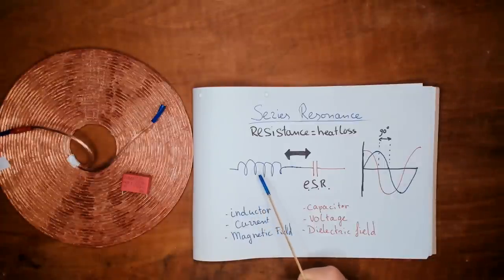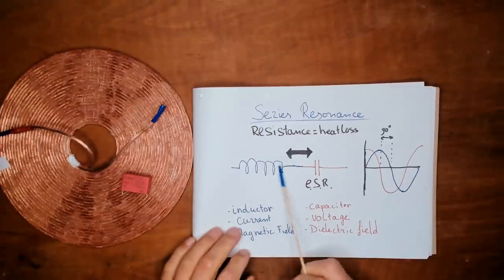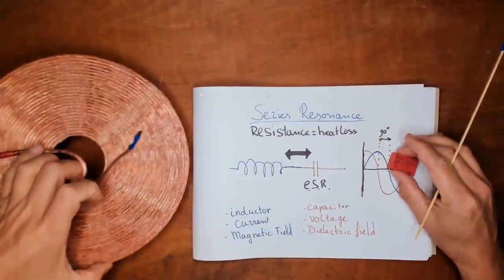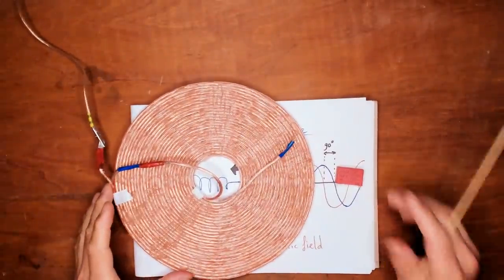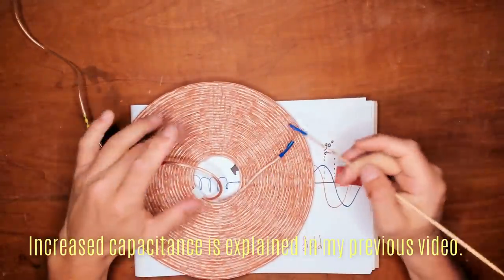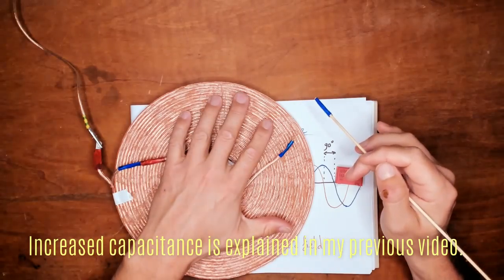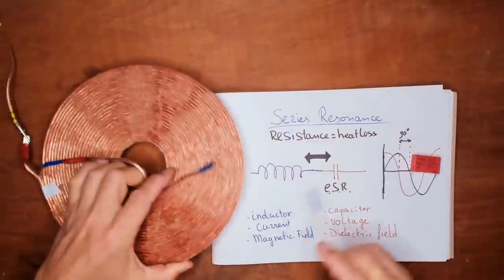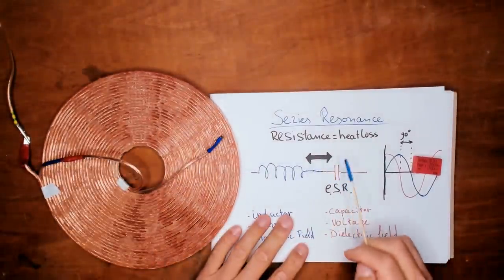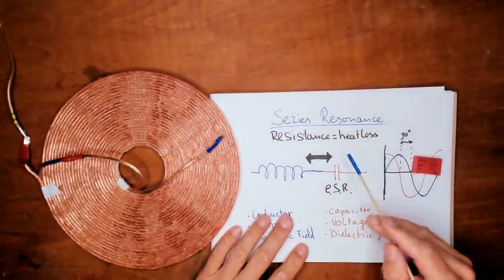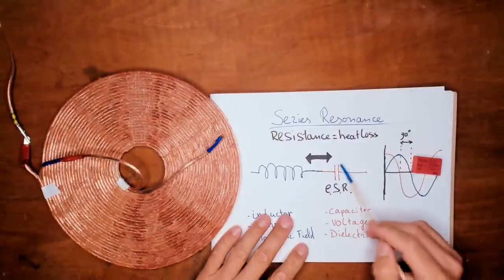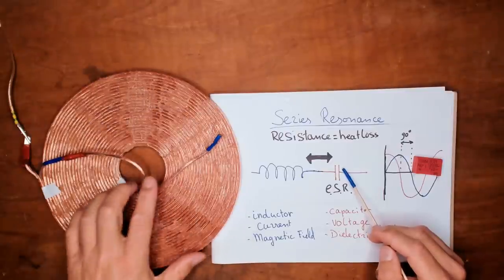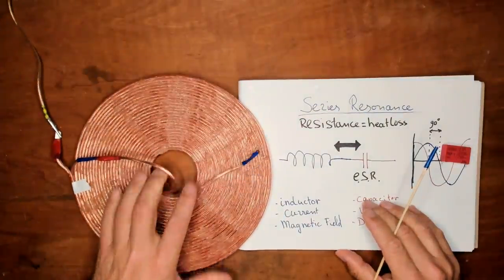We looked at this series resonance from the perspective of a single coil and a single capacitor. But we are talking about a biphilar coil. A biphilar coil has capacitance. It has increased capacitance by the voltage difference between the windings. When we now look at this energy transfer between the capacitor and the coil, the capacitor also represents the dielectric field of the coil.